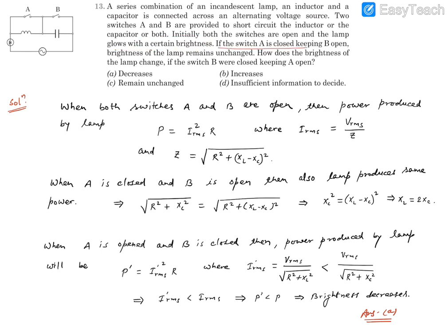If switch A is closed and B is open, brightness of the lamp remains unchanged. How would the brightness of this lamp change if switch B were closed keeping A open?